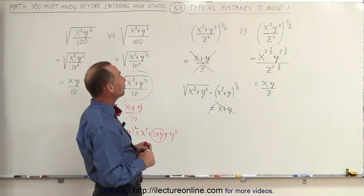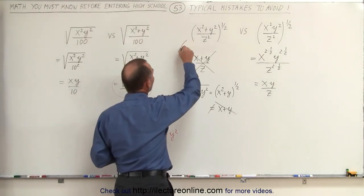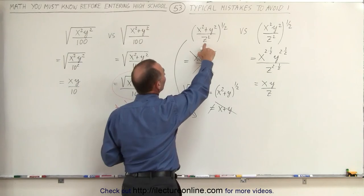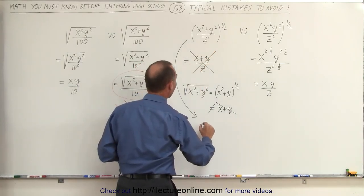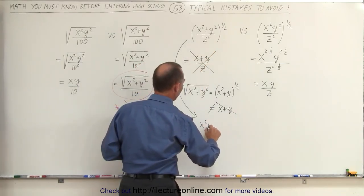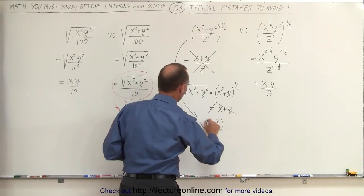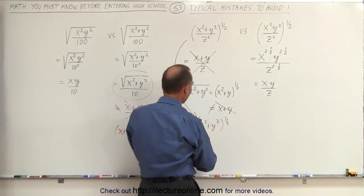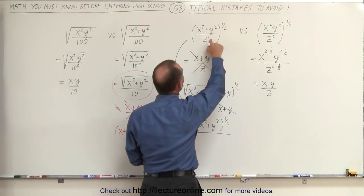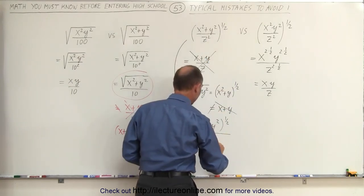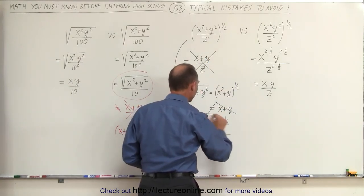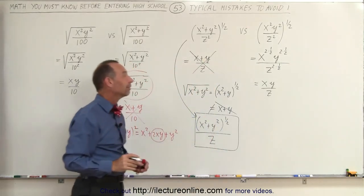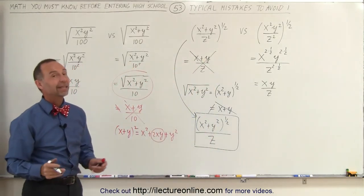Instead, what we should do is realize that only the denominator can be simplified. So this can be written as x squared plus y squared to the one-half power — which cannot be simplified — divided by z squared to the one-half power, which is simply z. That would be the simplest form in which the quantity can be written, and that's how it's done.